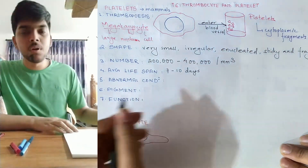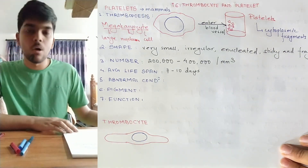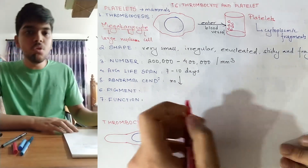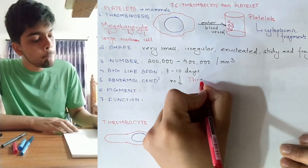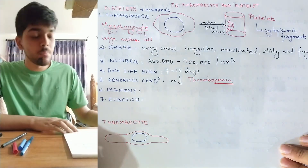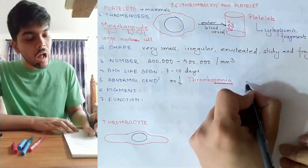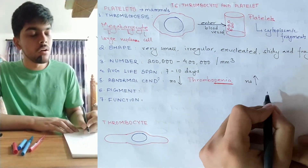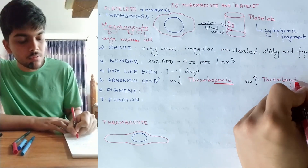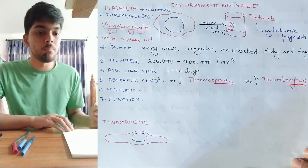An abnormal condition occurs when the number of cells is either more or less than the normal count. If the number of platelets is less than the normal count, that condition is known as thrombopenia — the suffix 'penia' indicates a number less than normal. If the count of platelets is more than the normal count, that condition is known as thrombocytosis — the suffix 'cytosis' indicates a number more than normal.